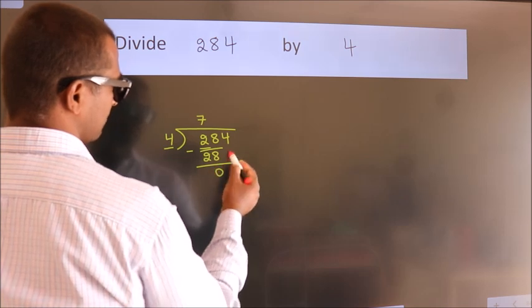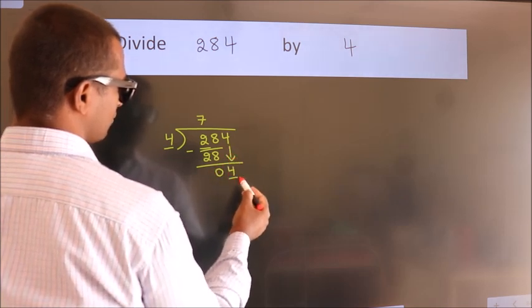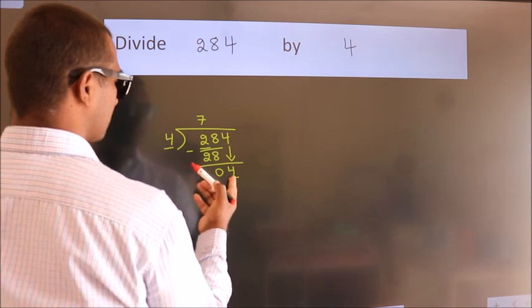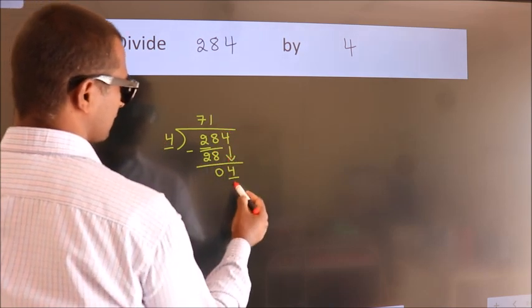After this, bring down the beside number. So 4 down. When do we get 4? In 4 table, 4 times 1 is 4.